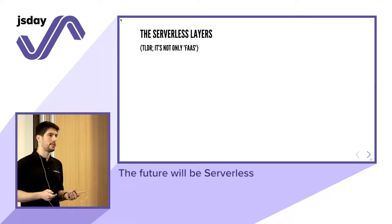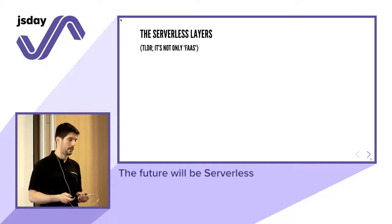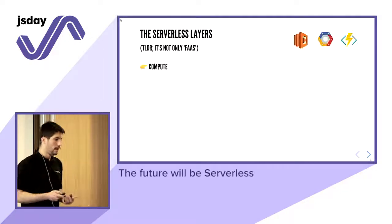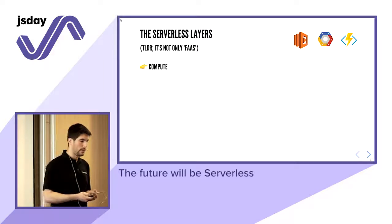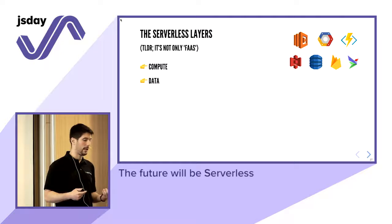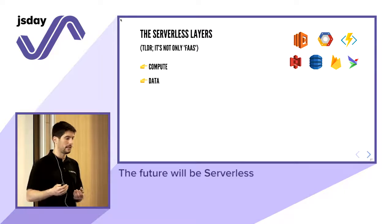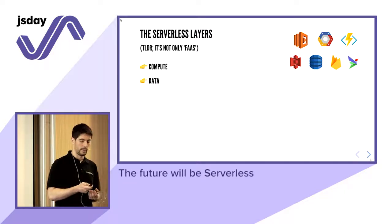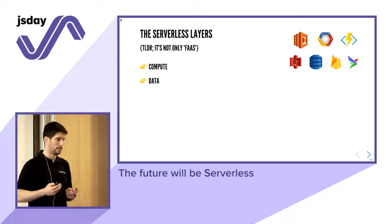Another perspective on serverless is that there are many layers addressing different needs when building a serverless application. It's not only about function as a service. Function as a service is just the first layer — it gives us compute power and a way to define business logic. But then we need data storage, which can be in the form of objects or files like S3, or a database like DynamoDB, Firebase, and other serverless databases. The pricing model means the more you use them, the more you pay, but with very low consumption you pay very little.